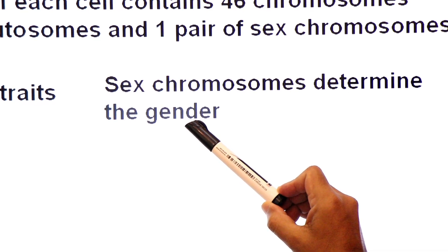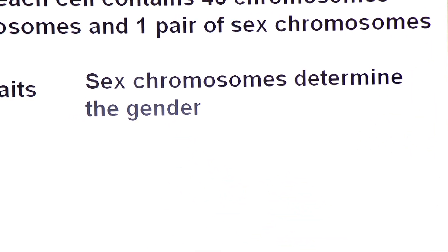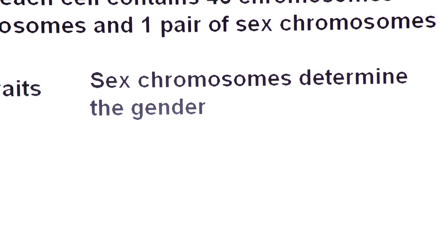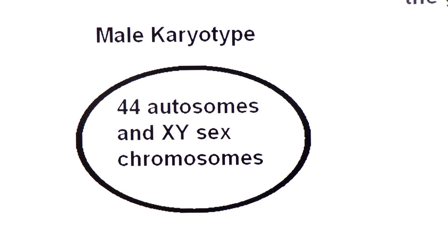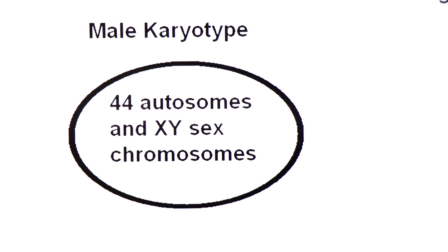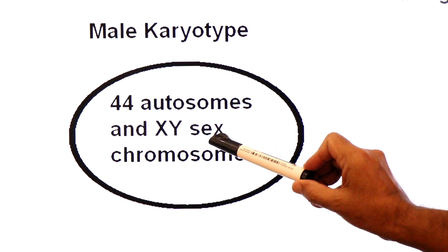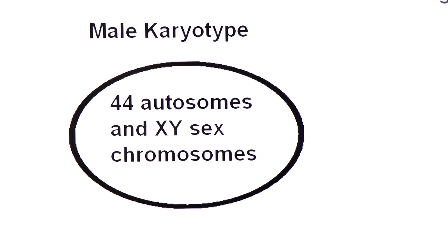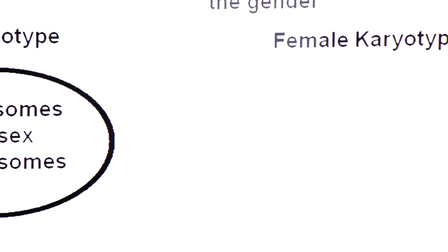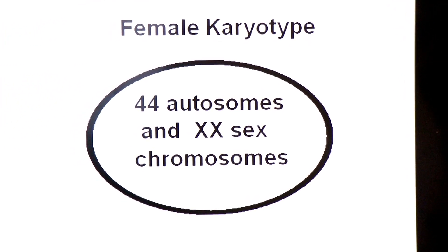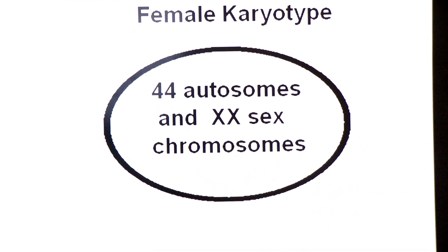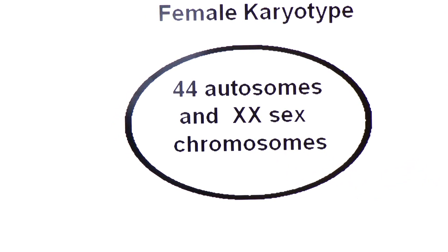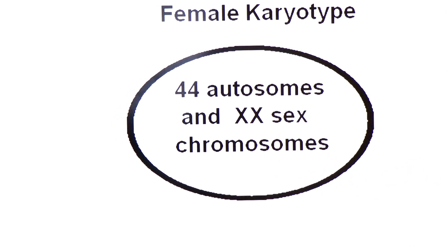What will be the sex of an embryo after fertilization? Now look at the male karyotype in human beings — it is 44 plus XY: 44 autosomes and XY as the pair of sex chromosomes. And the female karyotype in human beings is 44 plus XX: 44 autosomes and XX as the pair of sex chromosomes.